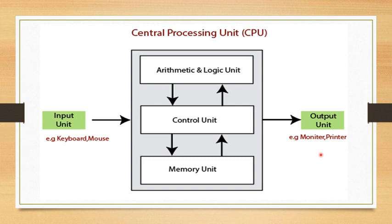Under the direction of the Control Unit, program instructions and data are taken into system memory — which is RAM — either directly from the user through input devices or from secondary memory. Then one by one the instructions and data are moved into internal memory registers in a proper sequence. The Control Unit informs the ALU of the precise arithmetic or logic operations to be performed and moves the data to the ALU. The ALU performs the calculation or comparison and returns the result to the memory registers. The Control Unit then transfers the result to a secondary memory device for storage or to an output device.